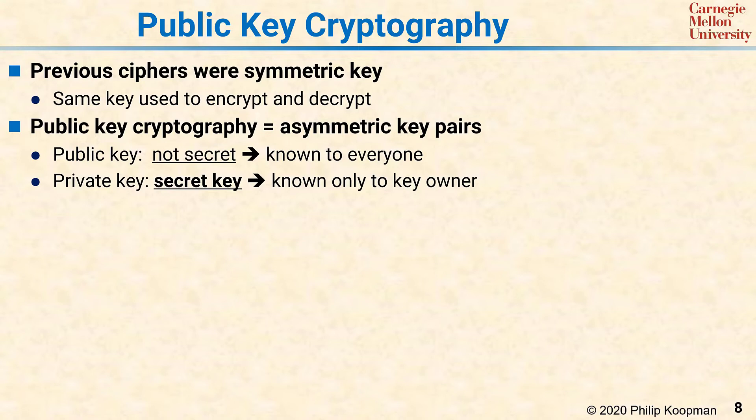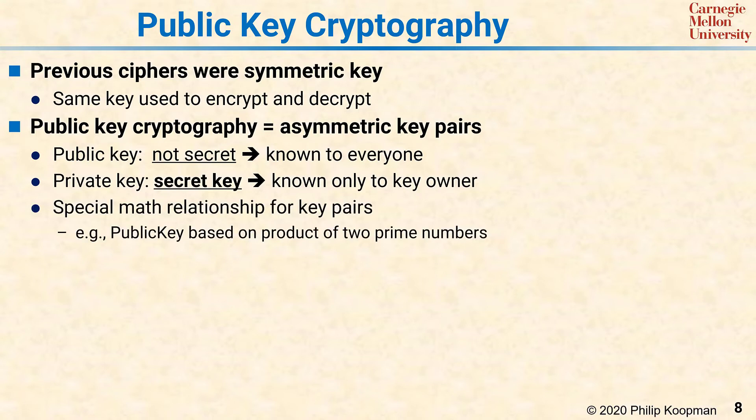Now, how can you get two people to communicate if neither one knows the other's secret key? You can do it if the public key and the private key have a special mathematical relationship. So if Bob wants to talk to Alice and they exchange public keys, it works as long as each of Bob's and Alice's public and private keys have that special relationship.